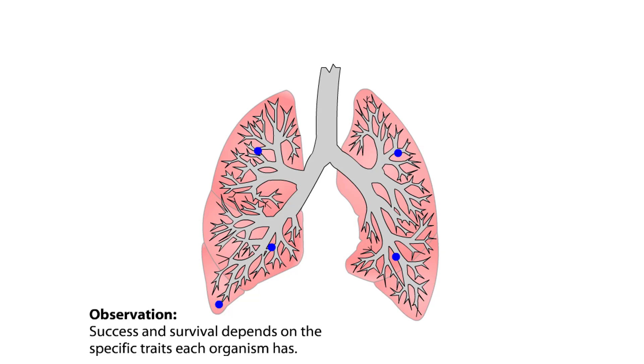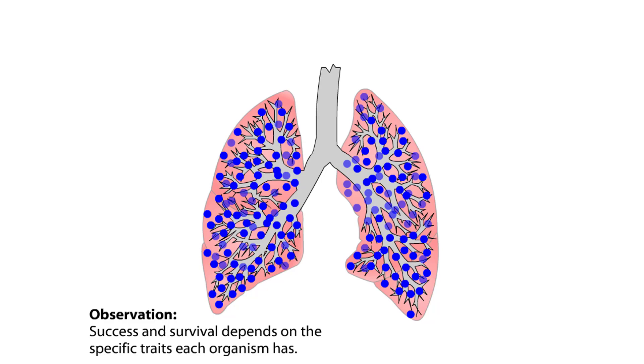Only the drug resistant cells are able to survive in the new environment, thus this environment selects for resistance. Over time, the frequency of the drug resistant bacterial cells increases. In this new environment, cells with drug resistance have a higher fitness value.